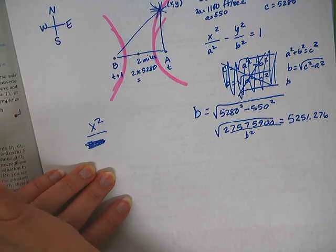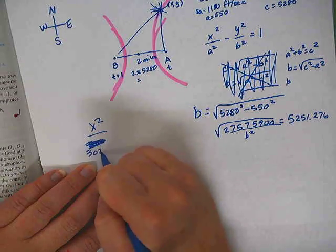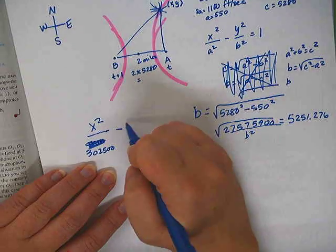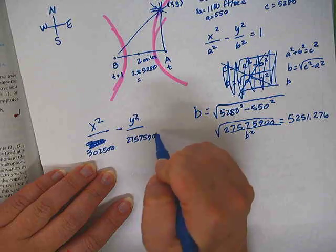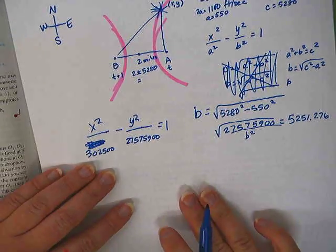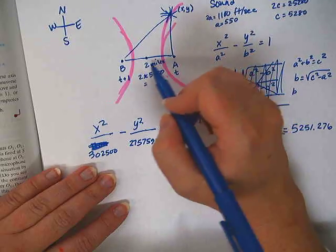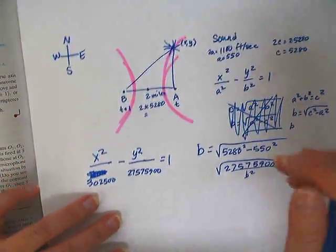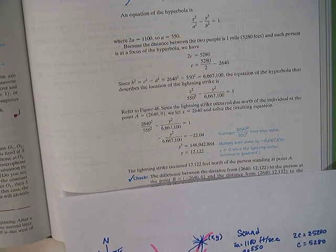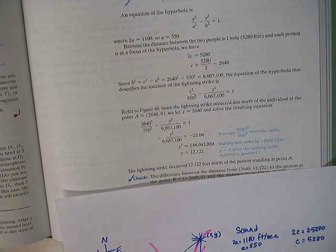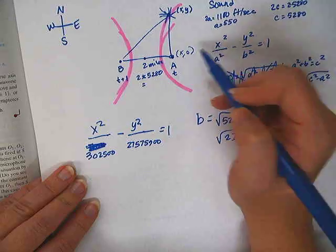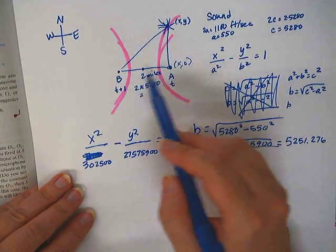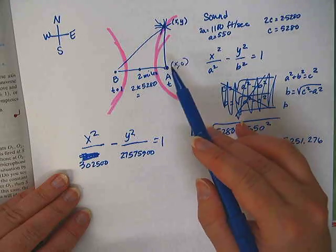Okay, so in our equation we would have x squared over 1100. No, that's not a squared. What's 550 squared? 32500, and then we would have y squared over 27575900 equals 1. Okay, well if this point right here is at x, y.